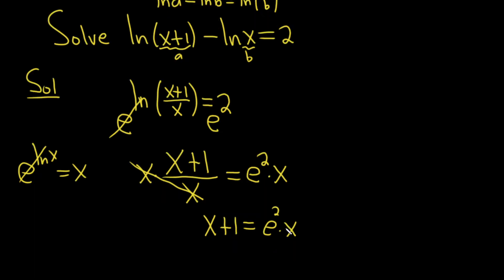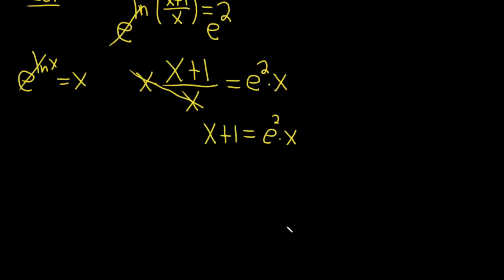And we're looking for x, so it's a good idea to get them all on one side together. So let's go ahead and subtract x here like this. So we have 1 equals e squared times x minus x.